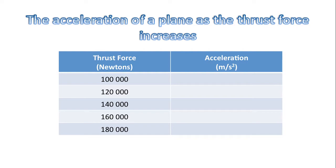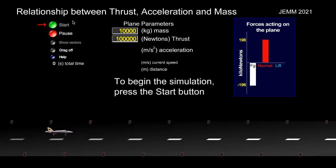So with our simulation, we're going to vary the thrust force and try to measure the acceleration while keeping the mass steady. These are the values we're going to use for our thrust force. Here's our simulation. Our mass value is 10,000 kilograms and our thrust value is 100,000 newtons. Let's see what we get for our acceleration.